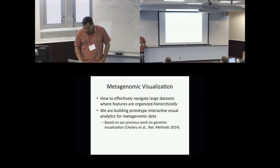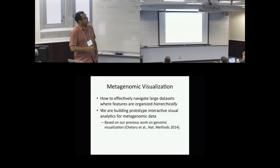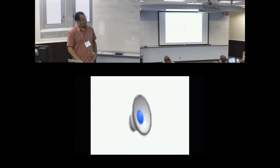Which leads me to believe that this idea of one model fits all types of communities is also wrong, because some communities are under certain assembly rules and other communities are under other different assembly rules. And we perhaps shouldn't be treating the statistical models that we build for one community versus the other one in the same way. And of course, the thing that we've been working on is visualization. How to effectively navigate large datasets where features are organized hierarchically. And we're building prototype visualization methods for that.